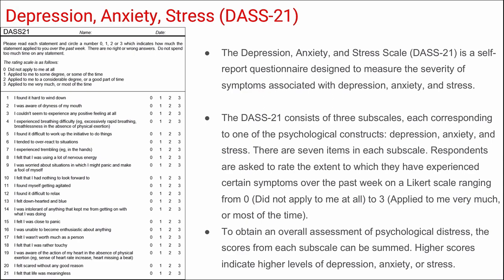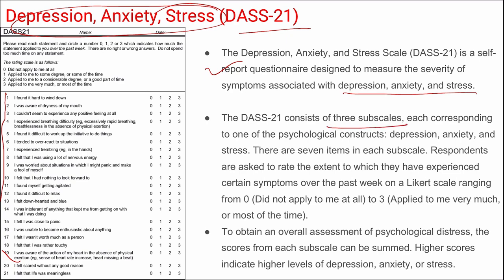Next is DASS-21 — Depression Anxiety and Stress Scale. It is a self-reported questionnaire with three subscales: depression, anxiety, and stress, each containing 7 items, totaling 21 questions. Respondents rate symptoms over the past week on a Likert scale from 0 (did not apply to me) to 3 (applied very much or most of the time). Scores from each subscale are summed, with higher scores indicating higher levels of depression, anxiety, and stress.